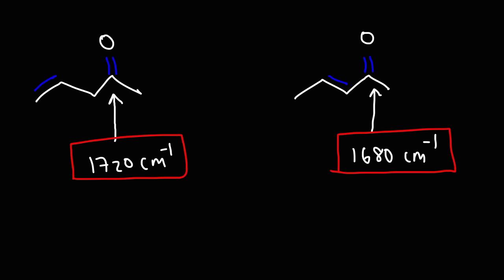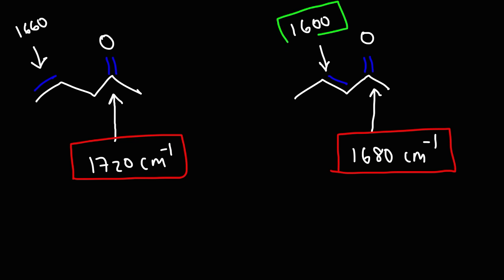The same is true for the double bond of an alkene. In a non-conjugated system, the alkene will absorb around 1,650 to 1,660. In a conjugated alkene, the absorption is going to be less — around 1,600. Conjugated alkenes absorb IR energy at a lower wavenumber than regular alkenes. Conjugation can reduce the wavenumber for ketones and alkenes.